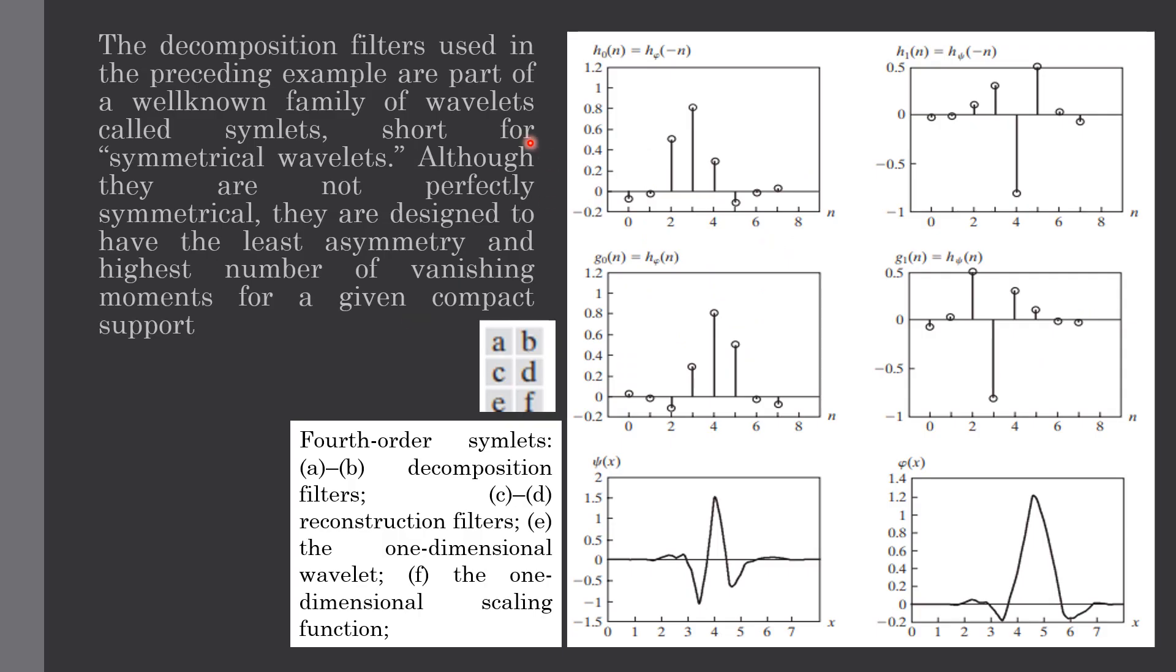The decomposition filters used in the preceding example are part of a well-known family of wavelets called symlets, which is a shortcut form for symmetrical wavelets. Although they are not perfectly symmetrical, they are designed to have the least asymmetry and highest number of vanishing moments for a given compact support. These two images represent the decomposition filters we used in 2D wavelet transform and these two represent the reconstruction filters. This is a one-dimensional wavelet and this one is a one-dimensional scaling function.